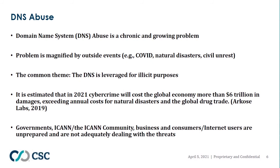One study estimates that cybercrime will cost the global economy more than $6 trillion this year alone, and that's only going to multiply — estimates through 2025 show it continuing to double, triple, and quadruple. The DNS is a globally scalable infrastructure and helps these activities have a big impact at wide scale. The big challenge is that governments, ICANN, businesses, consumers, and most internet users are truly unprepared and not adequately dealing with these threats. The bad guys are a step ahead.